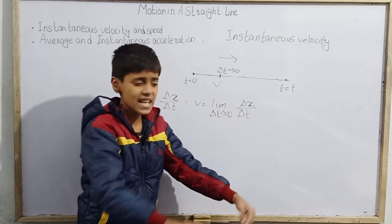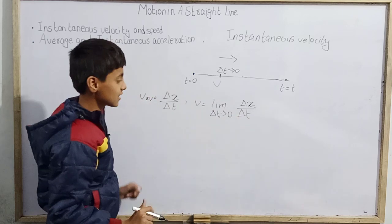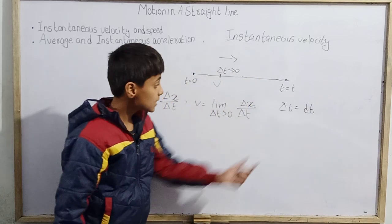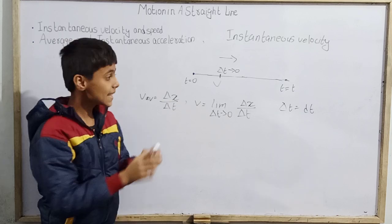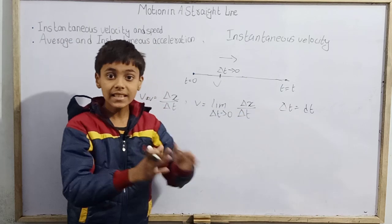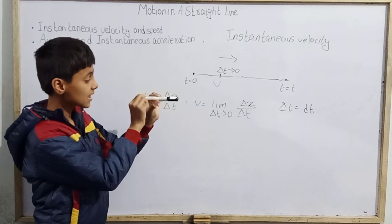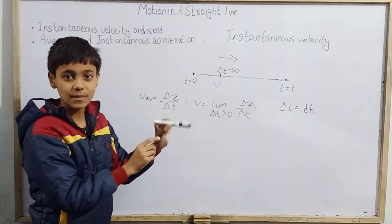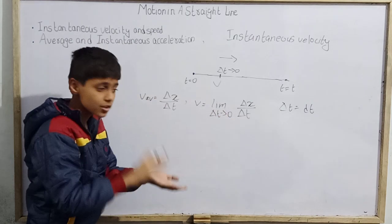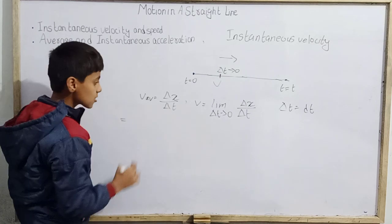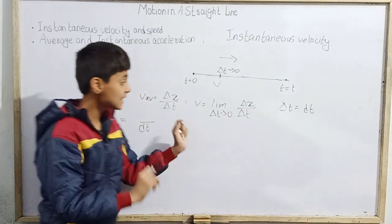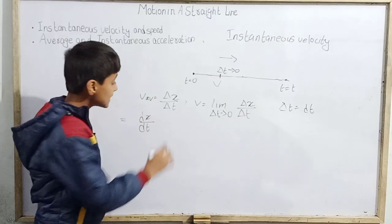If delta t is nearly 0 — a very small amount of t — then delta t becomes dt. dt means a very small amount of t, like a very small stripe. As we have studied differentiation, dt is a very small amount of time. So if delta t becomes dt, then delta x will also become dx — a very small amount of displacement — because the time is very small, so the displacement covered is also very small.